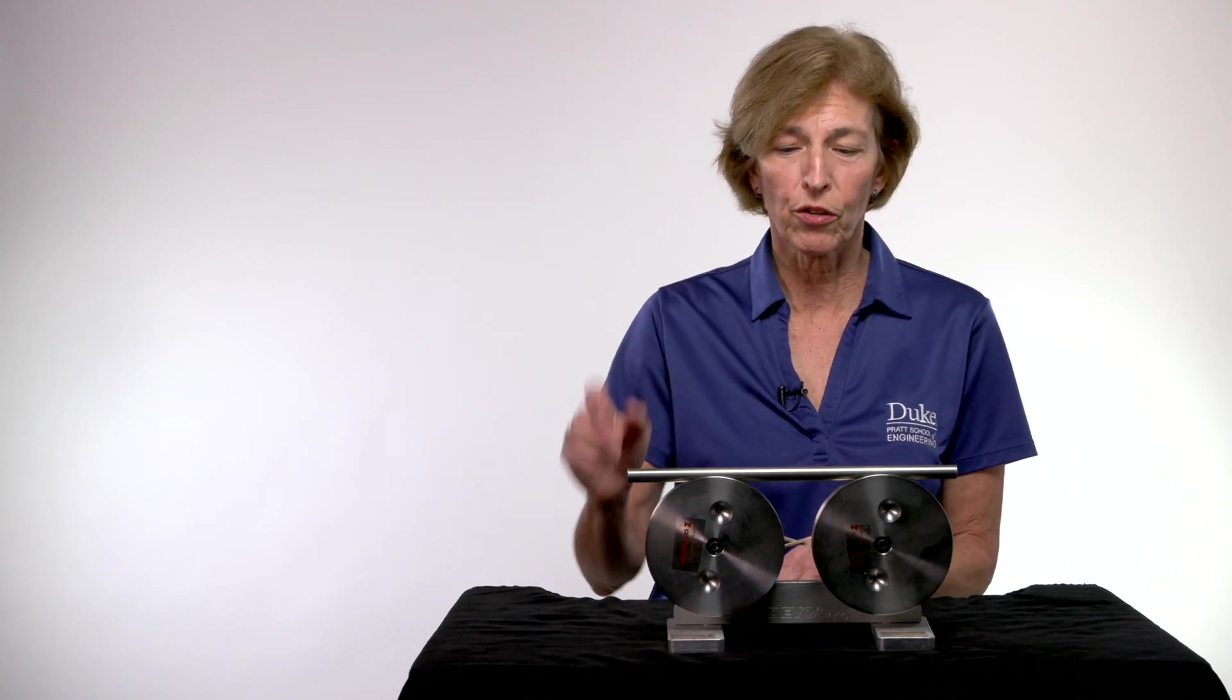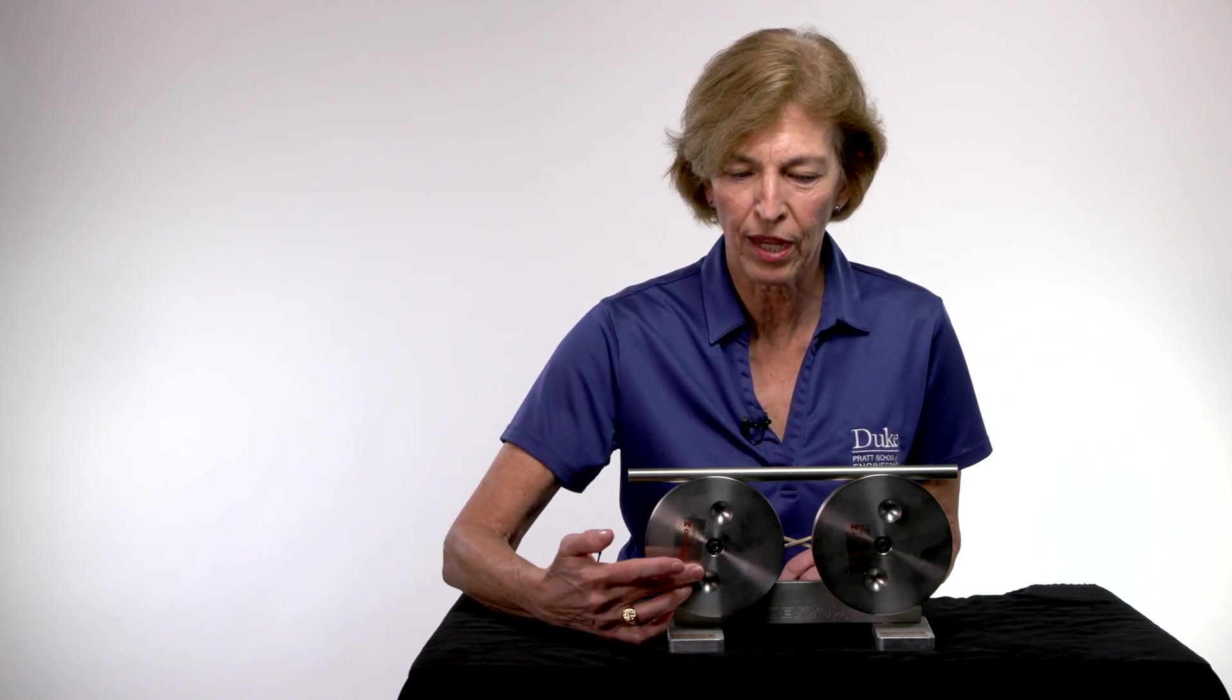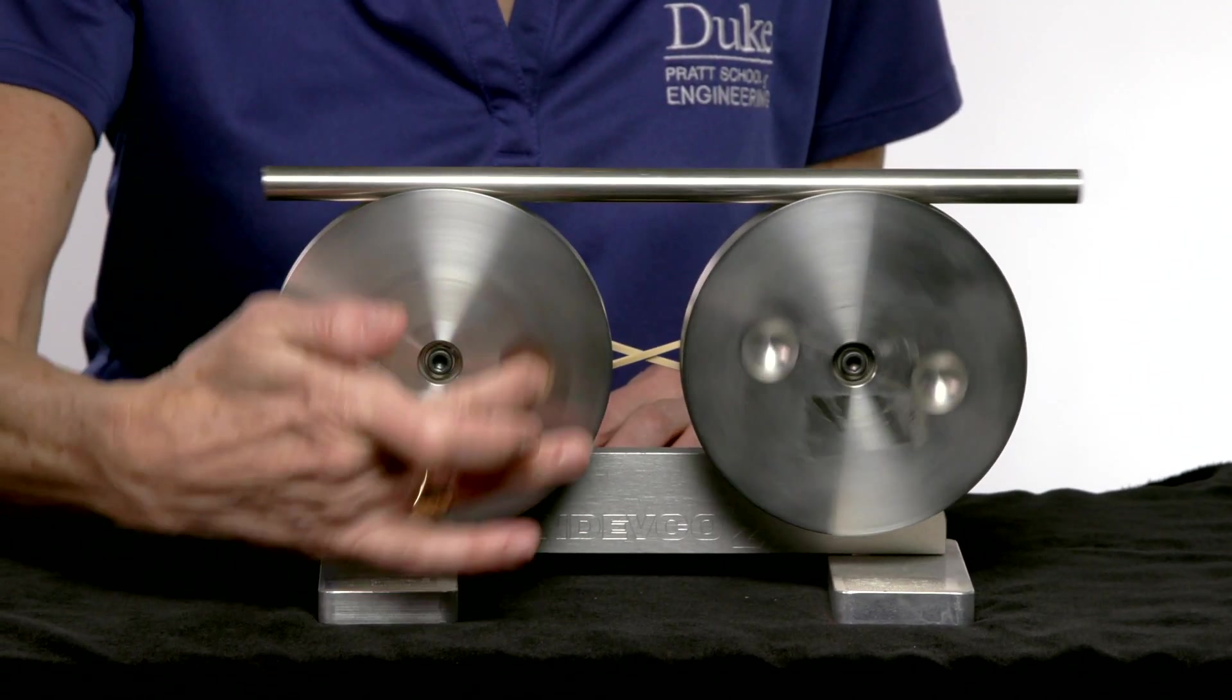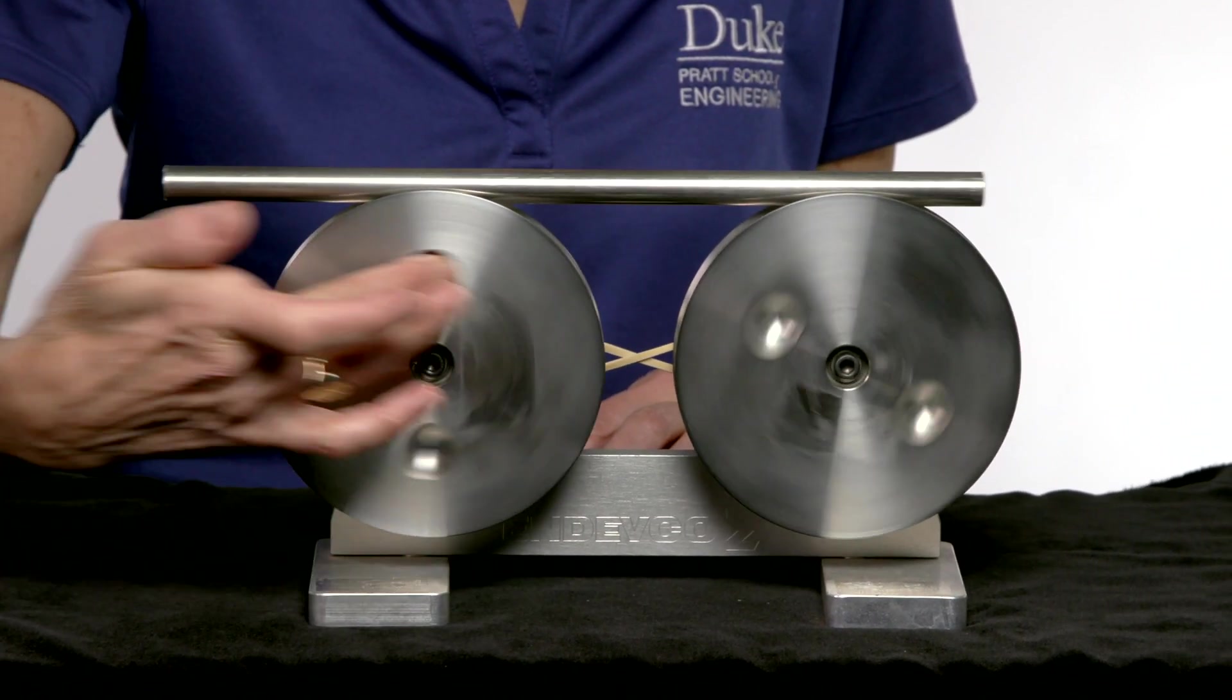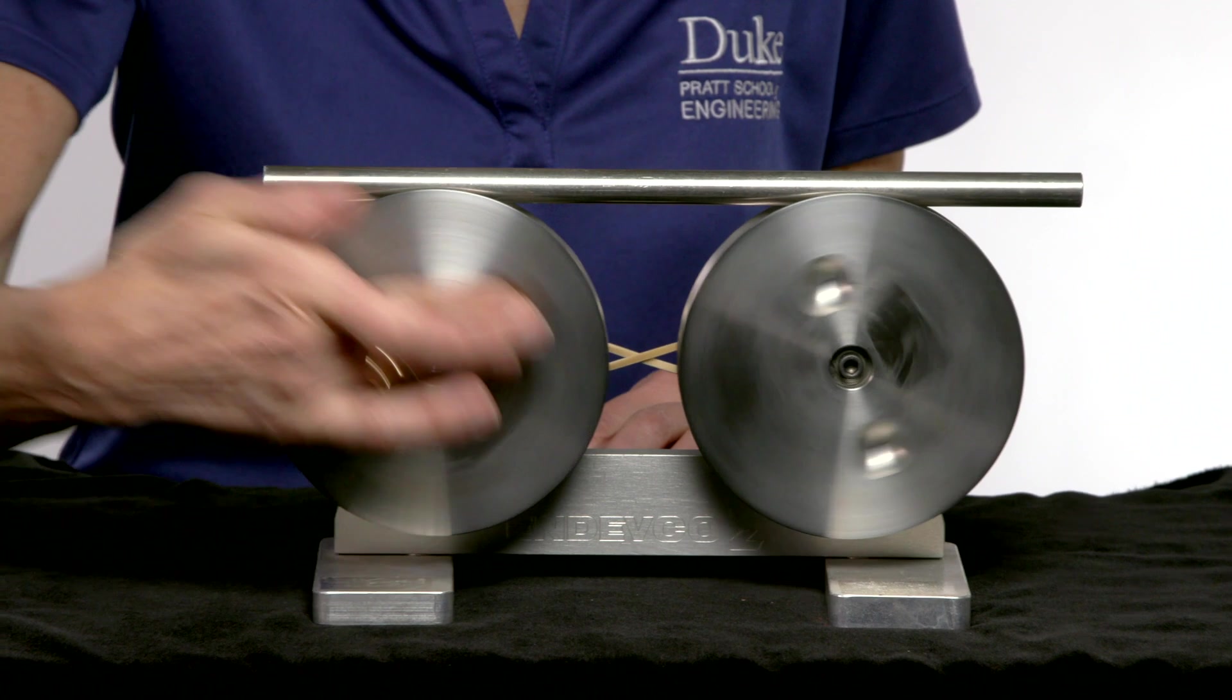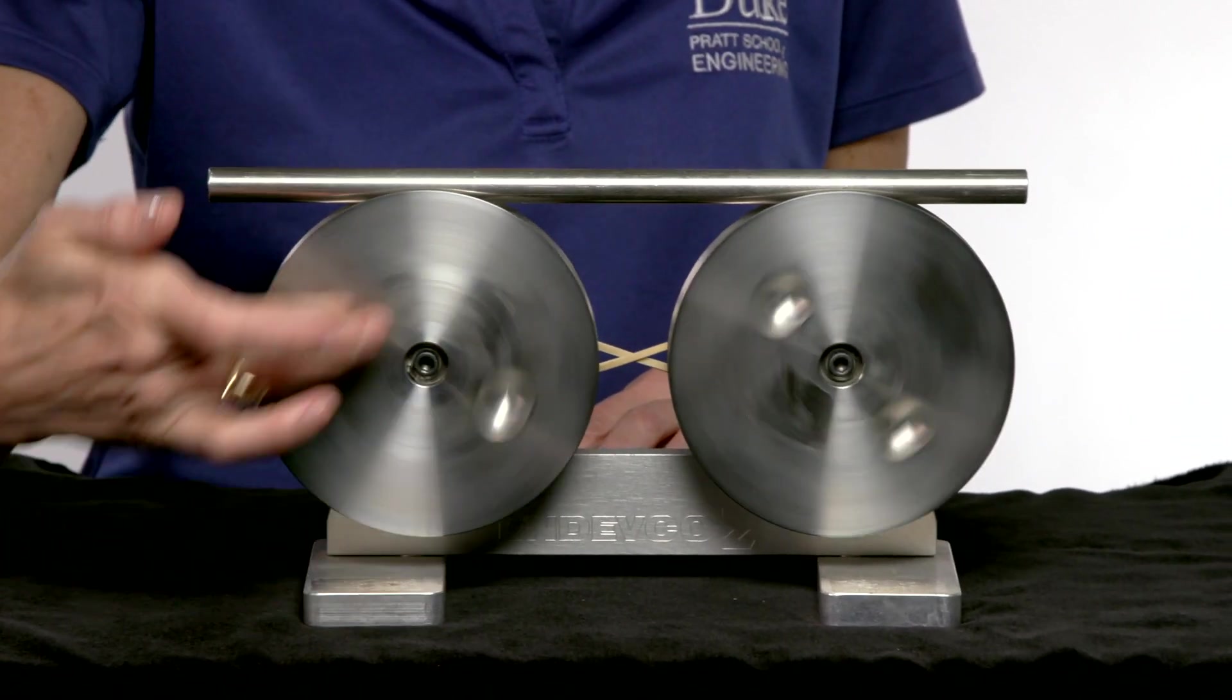So let's look first at what happens when I turn the wheels to the inside here. Watch what happens to the bar that's sliding. See it oscillating on the top? If I change the speed of the wheels, does it change the speed of the bar?